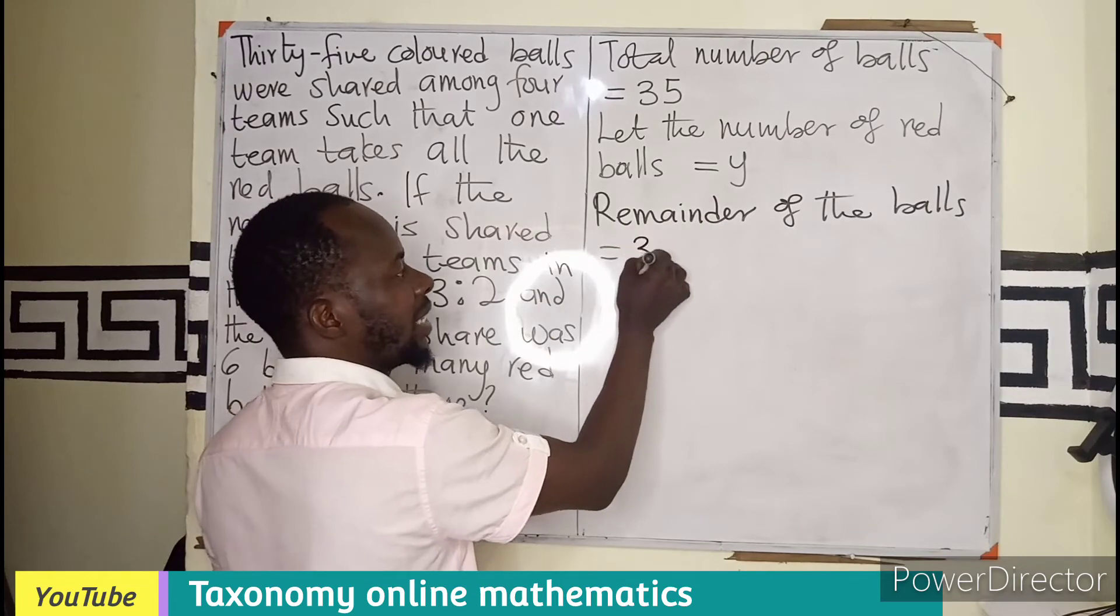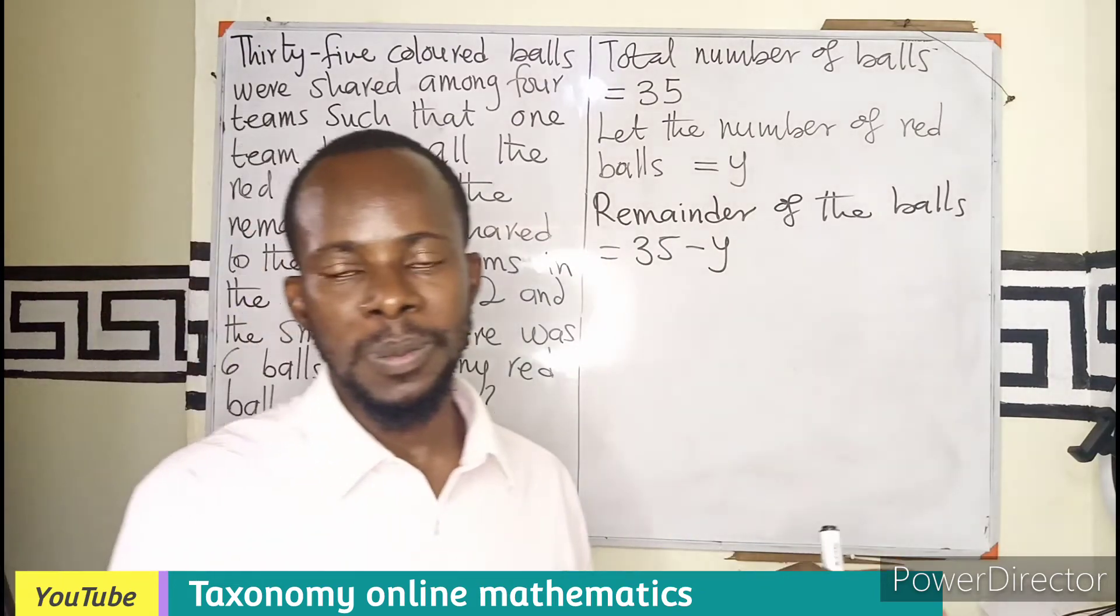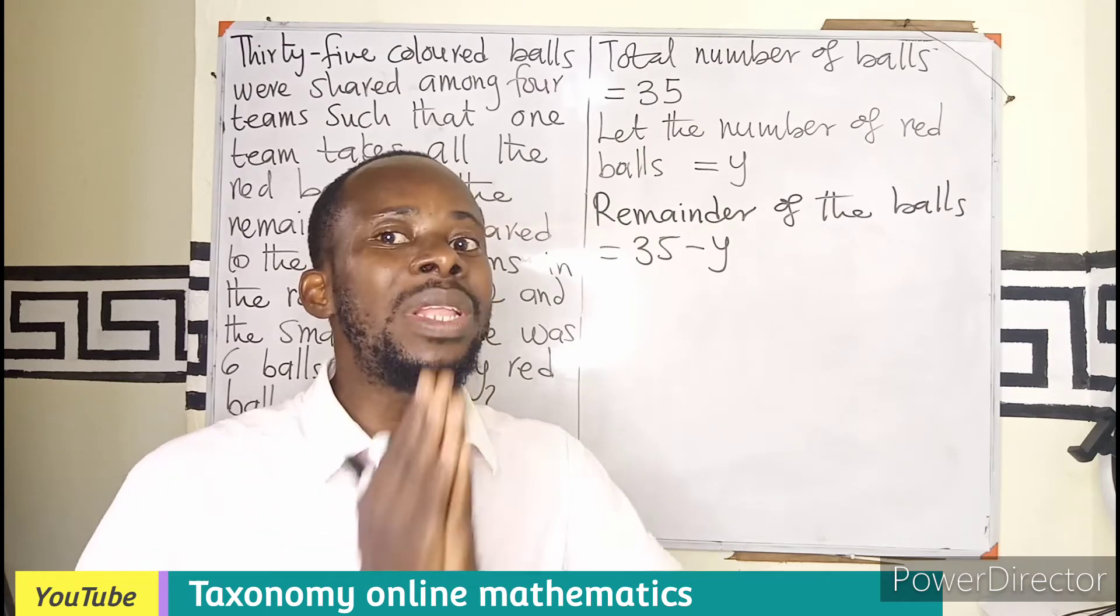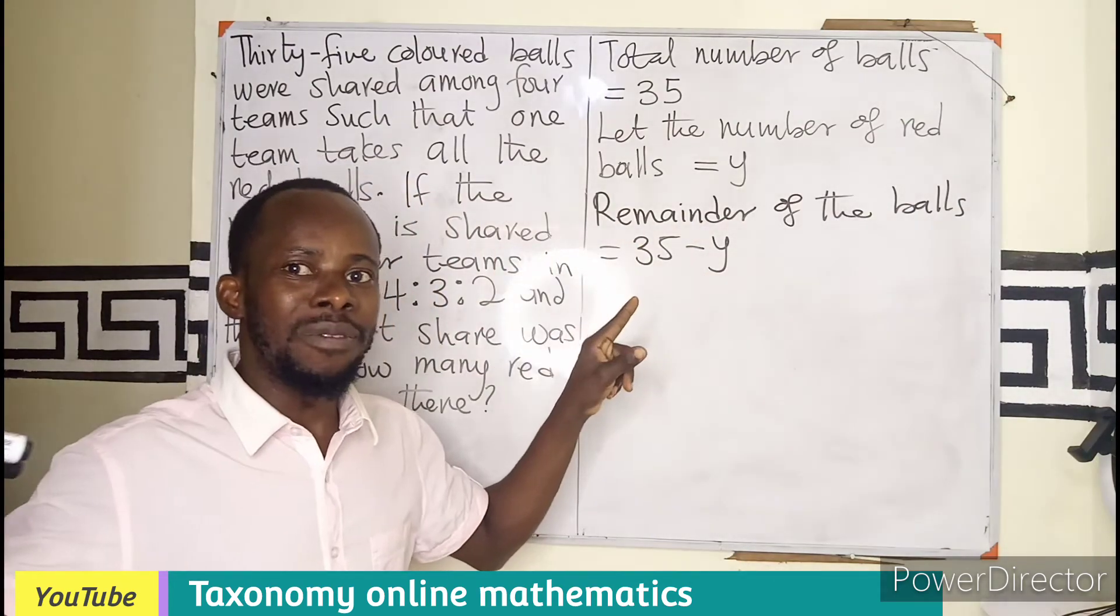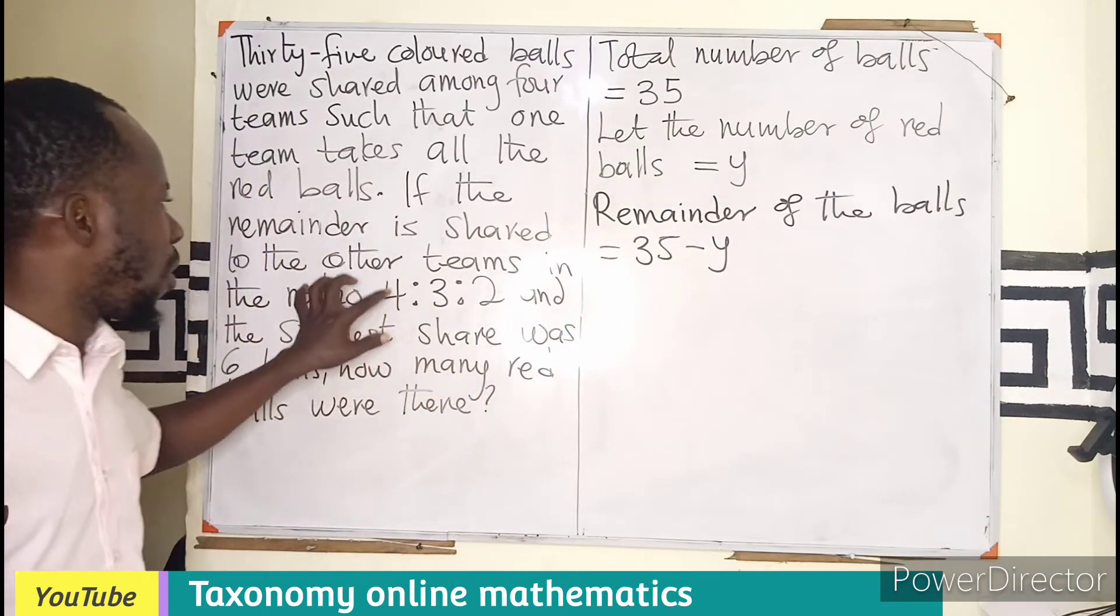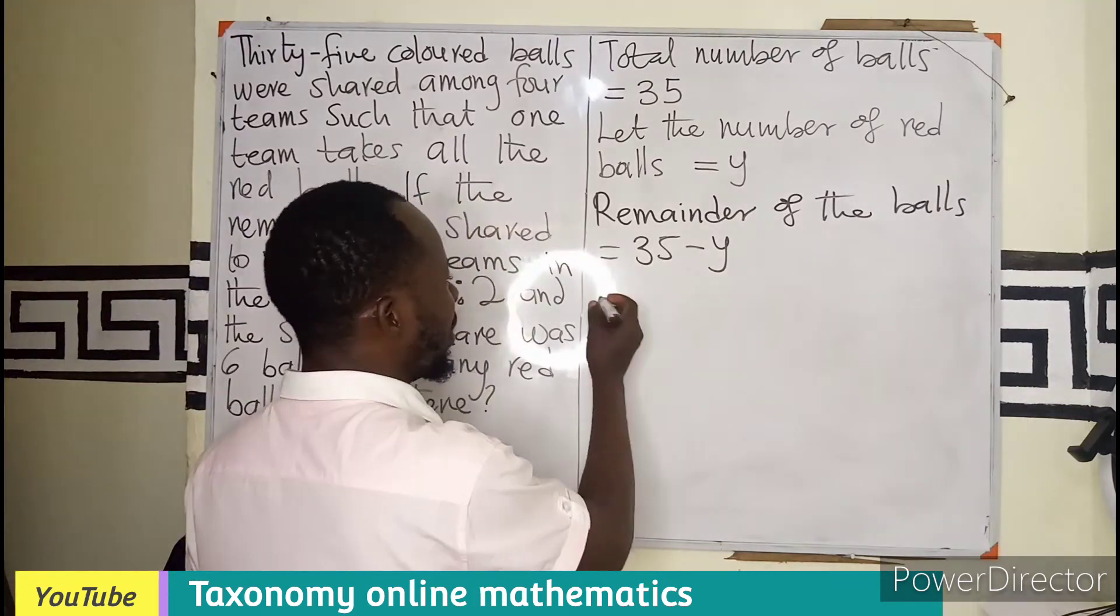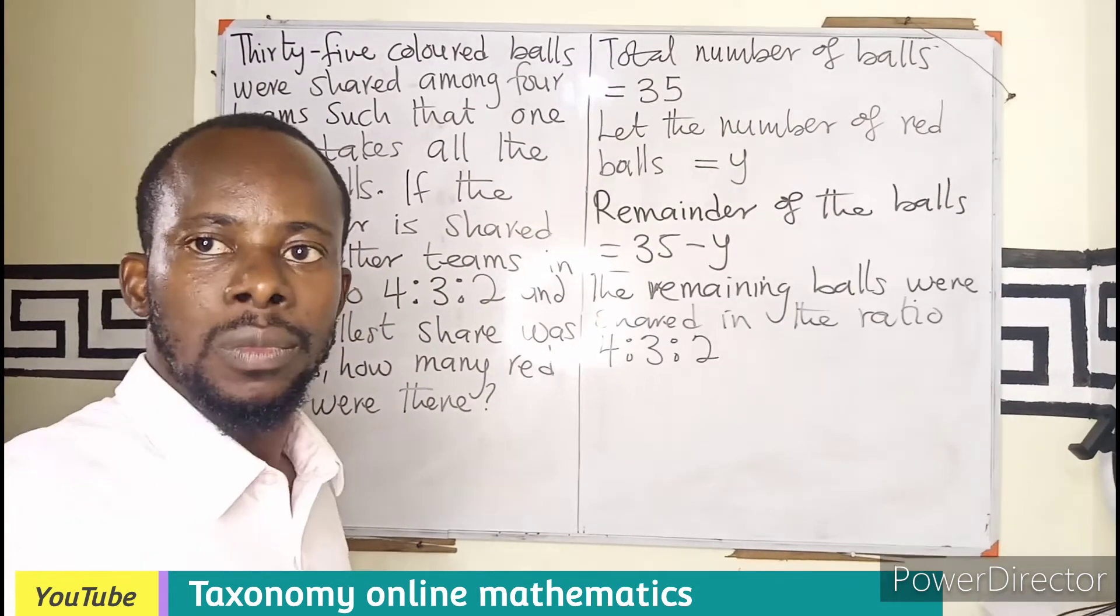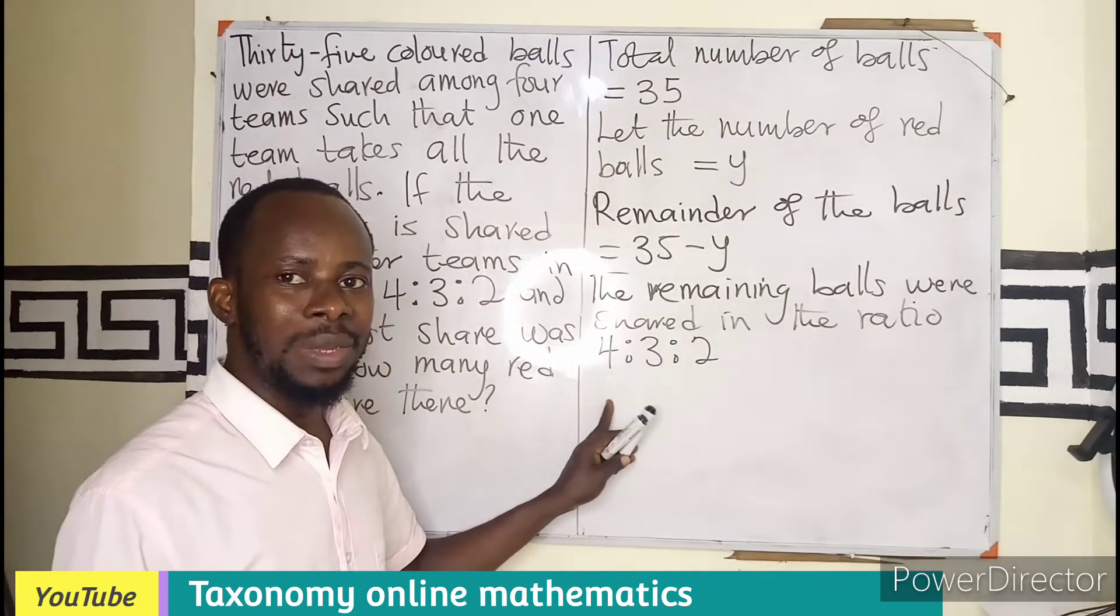It's going to be there are 35 of them, then we are taking away the Y, which is the number of red balls. In the beginning, it was 35, then we assumed that the red balls are 10. So we take away 10 from 35 to give us 25. So this is our 25 if we know the value of Y. So this is the number that is shared among the remaining three teams in this ratio. So the remaining balls were shared among the three teams in this ratio.